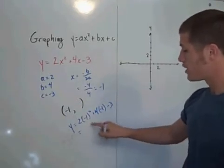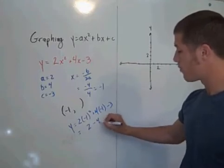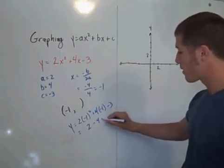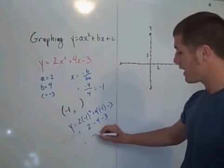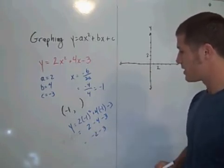Well, this is 2 minus 4 minus 3. This is negative 2 minus 3. This is negative 5.